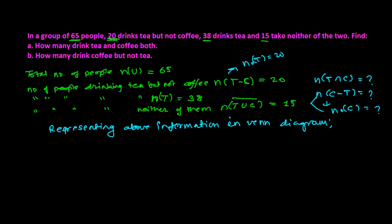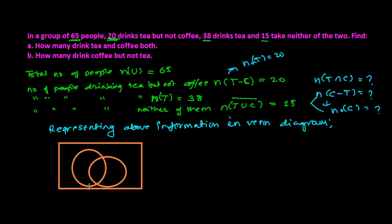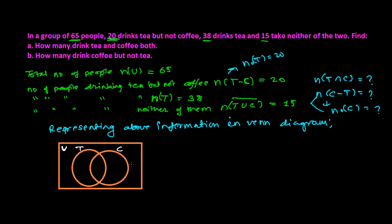Now representing all the given information in the Venn diagram. We draw a rectangle, and inside we have one circle for tea and one circle for coffee. The total number of people is 65. We start filling the diagram: the number of people who take tea but not coffee is 20, so we write 20 in the tea-only region.